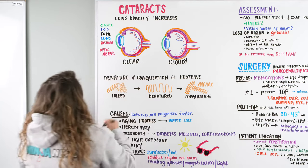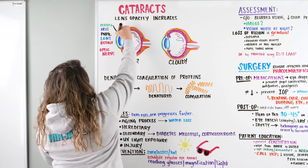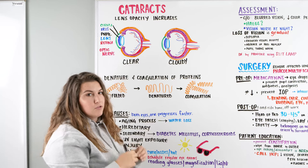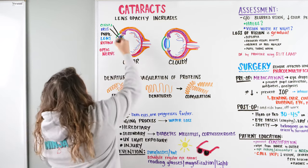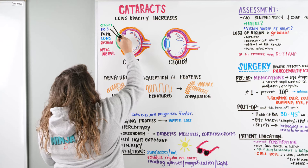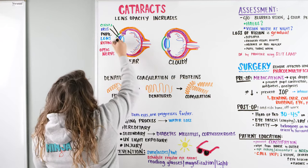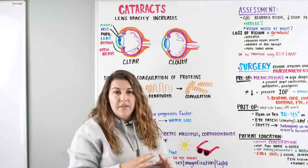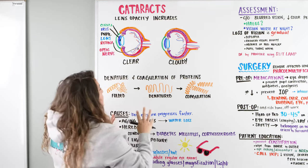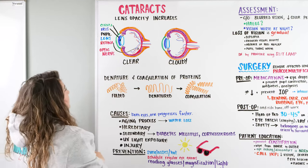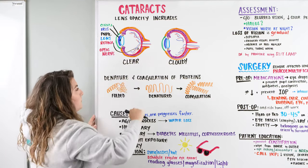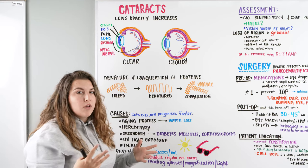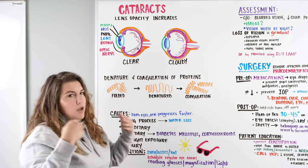We have the cornea protecting the outside of our eye. We have the iris — the coloring of the eye — which contracts and dilates to allow light through. That light goes through the opening which is the pupil. Then we have our retina in the back which takes light, makes it into a signal, sends it down the optic nerve to our occipital lobe and into our brain — that's how we get our vision. We have a sagittal view showing a clear and a cloudy lens.